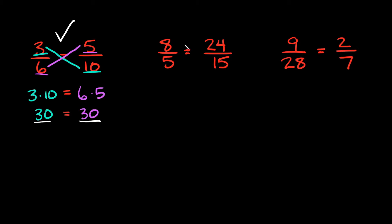So let's try a couple more. Here we have 8 over 5 is equal to 24 over 15. Are these proportional? So again the way you can check is by cross-multiplying. I'm going to multiply these two together and multiply those two together.